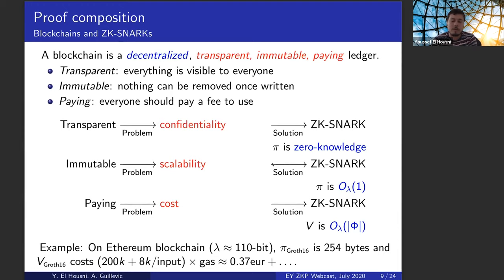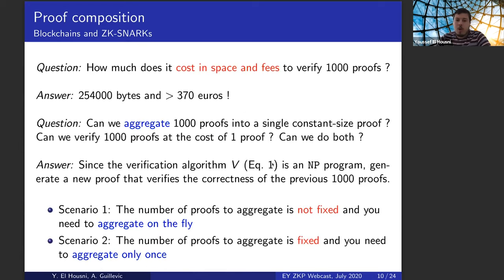So just on Ethereum, for example, for lambda, which is 128 bits because they are still using the BN254 curve, a proof is somewhat 254 bytes. So a question is how much does it cost in space and fees to verify 1000 proofs for instance? So the answer is like 1000 more in space and fees. So another question is, can we aggregate those 1000 proofs into a single constant size proof or can we verify those proofs at the cost of one proof or can we maybe do both?